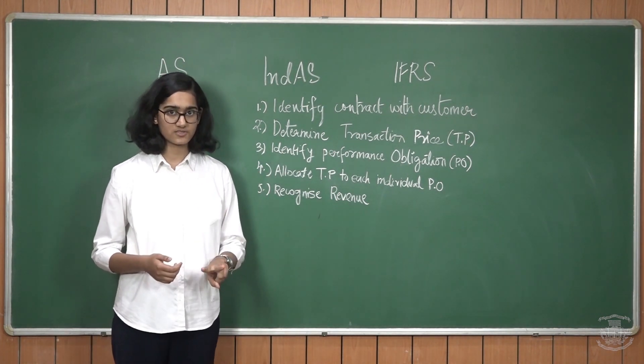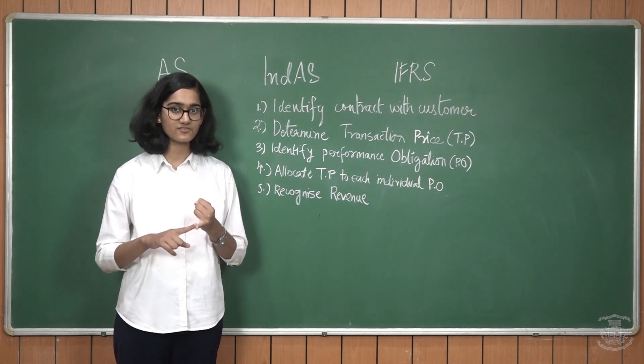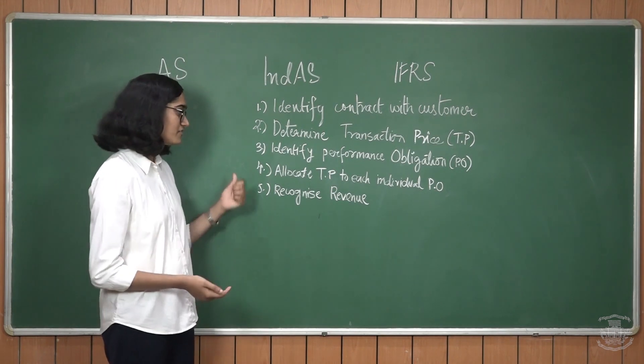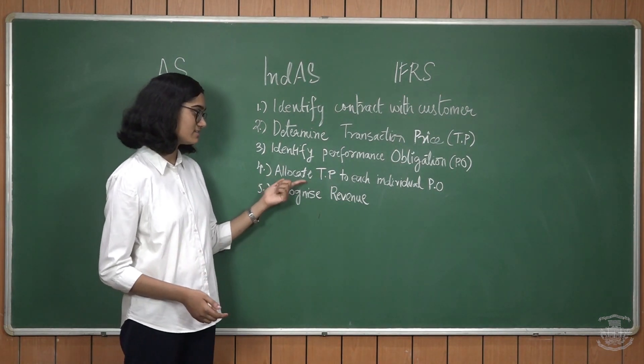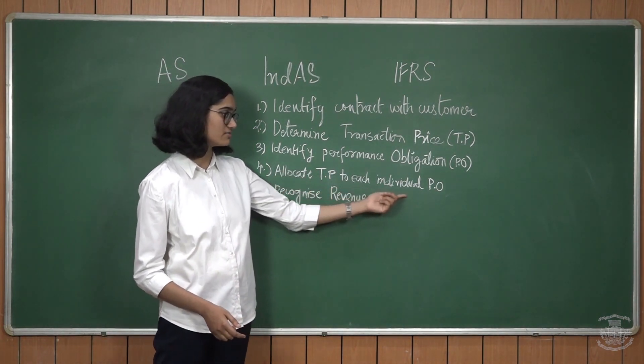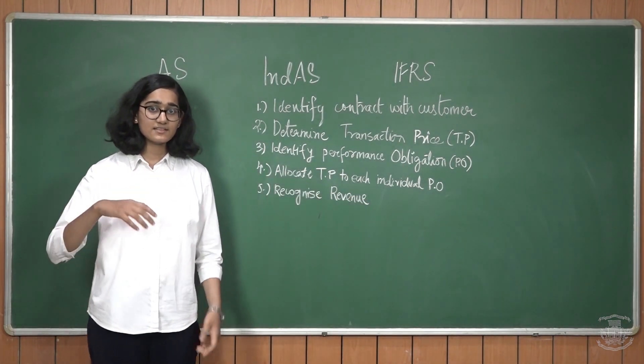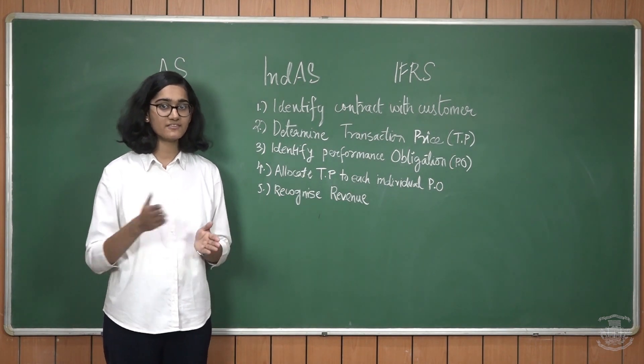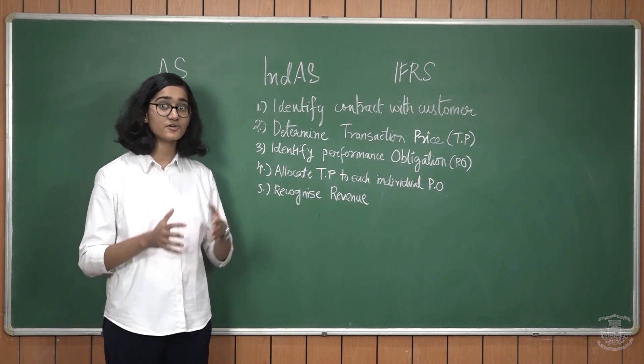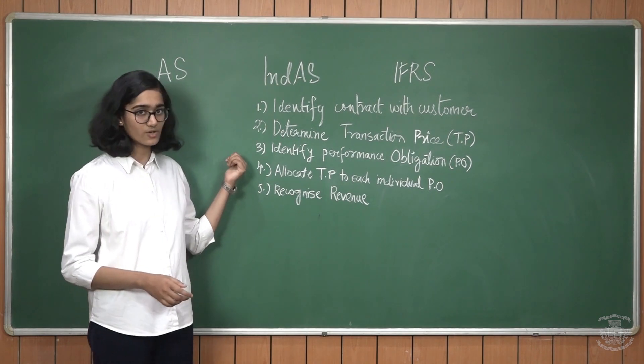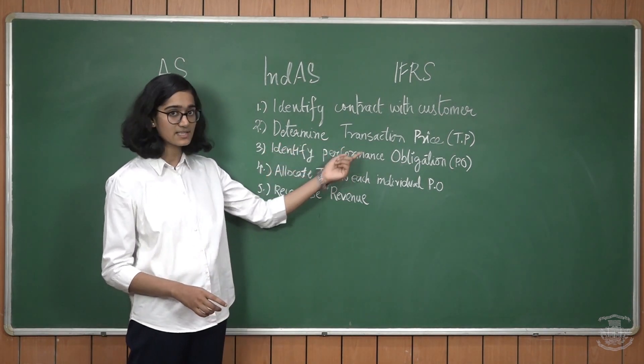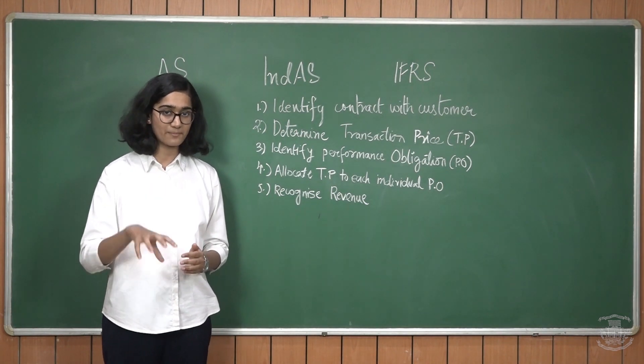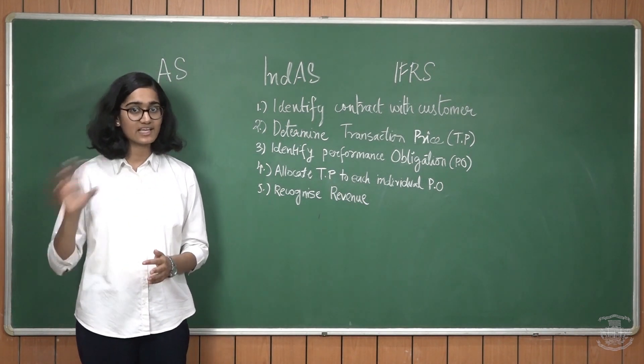If you come to point three, we have to identify the performance obligations. In this contract, there are two performance obligations: one is delivery of the machine and the second one is delivery of the installation services. Fourth point says, we need to allocate the transaction price to each individual performance obligation. In the current market scenario, individual machine and individual installation might be given for a separate price. The $500 of transaction price has to be allocated to the individual performance obligations based on the separable current market price in the market.